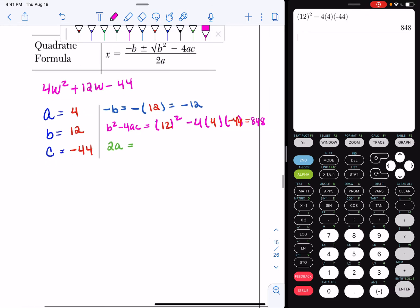Now we're going to find 2a. 2a is going to be 2 times your a value. In this case, your a value is 4. So 2 times 4 is going to be 8. These are the numbers you substitute.